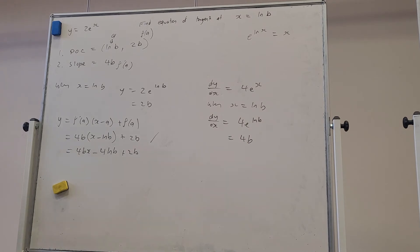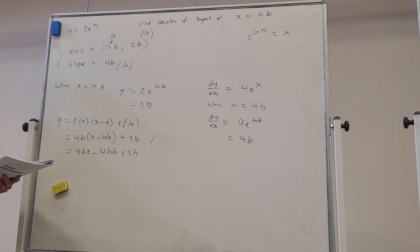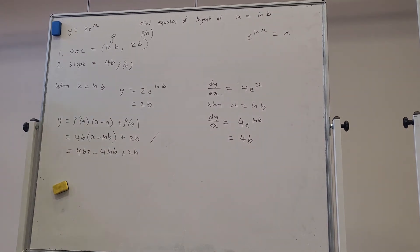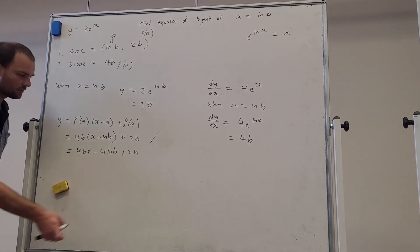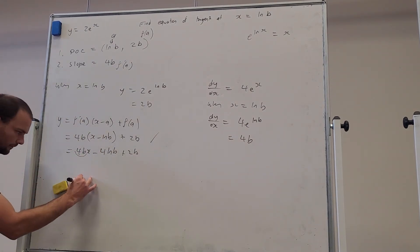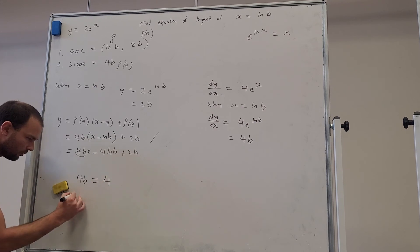Given the tangent has a slope of 4. The tangent has a slope of 4, find the value of b. Well, this is the equation of the tangent. This is the slope of the tangent. The slope of the tangent equals 4. So therefore, b is 1.